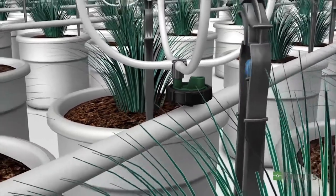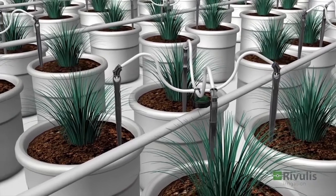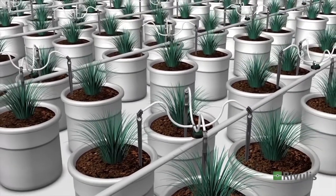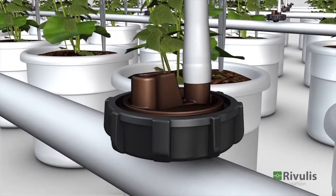In greenhouses and nurseries, a single dripper can irrigate several plants simultaneously with a two or four outlet adapter and a flow equalizing peg. This effective assembly provides a precise amount of water and nutrients to each plant.